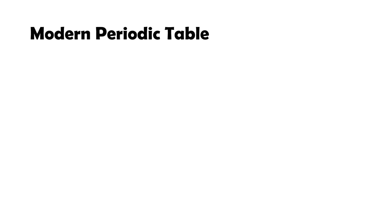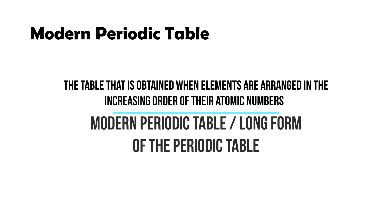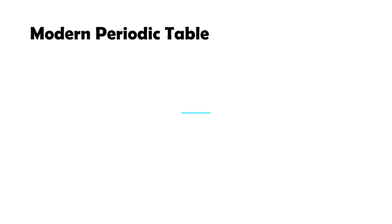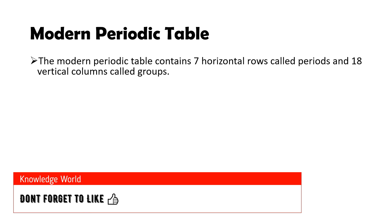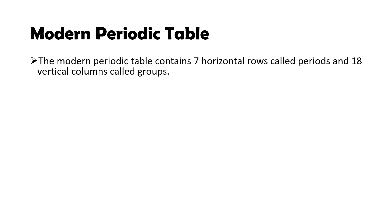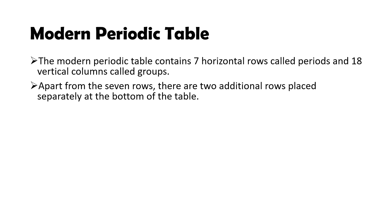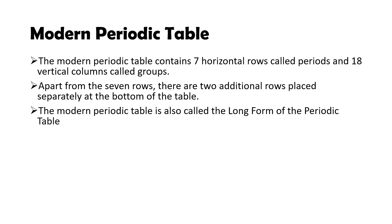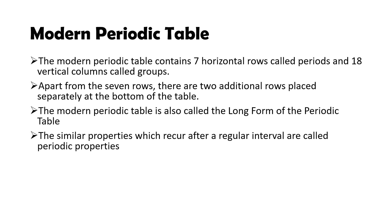In 1913, Henry Moseley demonstrated that atomic number, instead of atomic mass, is a more fundamental property for classifying elements. The table obtained when elements are arranged in increasing order of atomic number is called the modern periodic table, or the long form of the periodic table. It contains seven horizontal rows called periods and 18 vertical columns called groups. Apart from the seven rows, there are two additional rows placed separately at the bottom of the table. Similar properties which recur at regular intervals are called periodic properties.